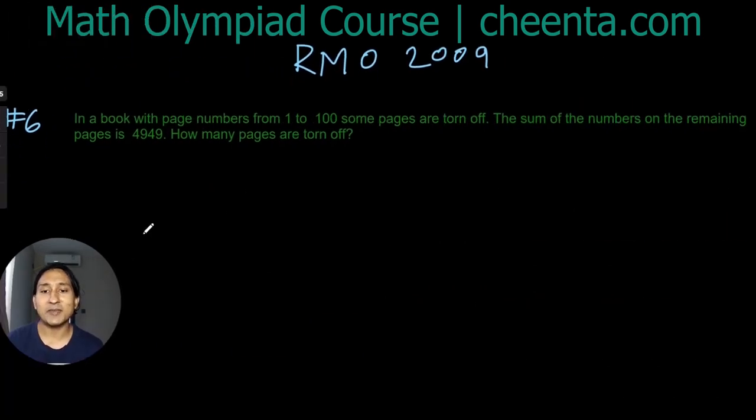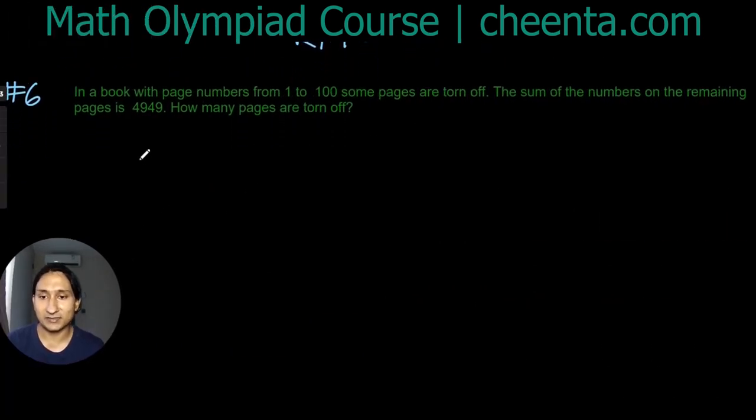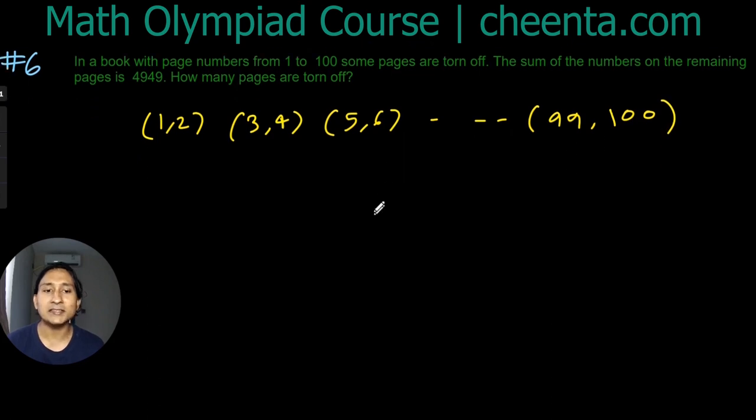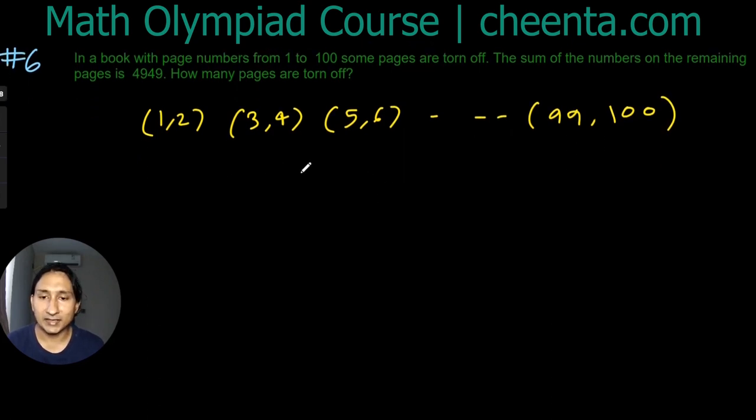We start by making some observations. The pages are numbered like this: 1, 2, 3, 4, 5, 6... 99, 100. In general, the numbers on a removed page are 2x - 1 and 2x.